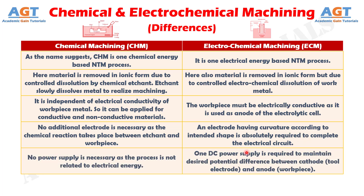Difference No. 5: No power supply is necessary in chemical machining as the process is not related to electrical energy, whereas in electrochemical machining, a DC power supply is required to maintain the desired potential difference between the cathode tool electrode and the anode workpiece.